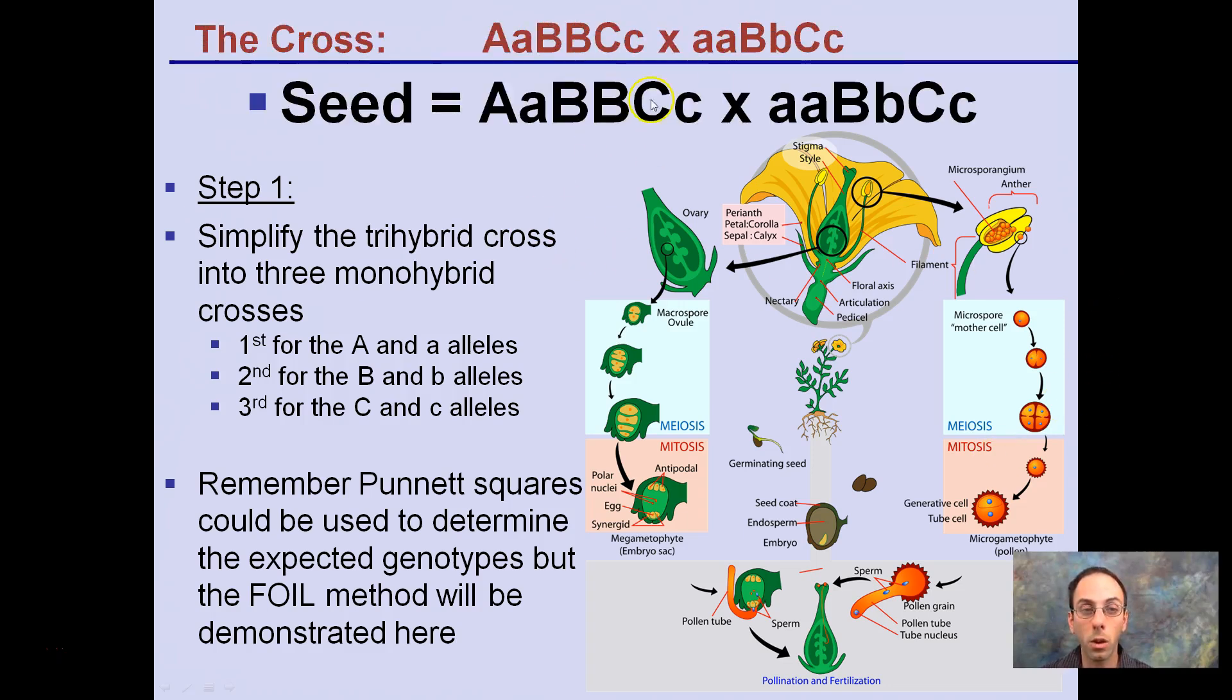So step one. Here's our cross. We want to know what seeds are going to be produced. We need to simplify the trihybrid cross into three monohybrid crosses. The first one's going to involve the A allele, second for the B, third for the C. Remember, Punnett squares could also be used for the monohybrid crosses, but we're going to focus on the FOIL method. It's a little bit easier to follow. And we're looking at producing a plant across and two plants together.